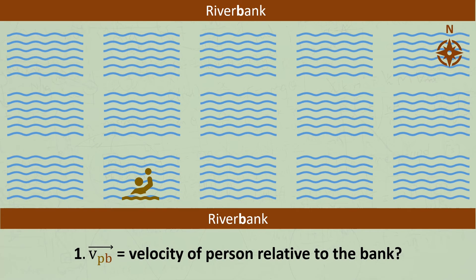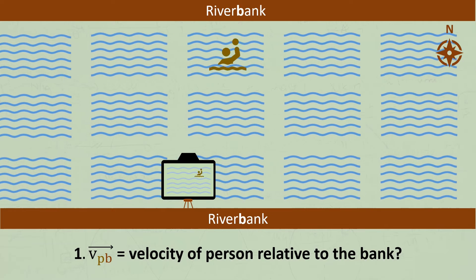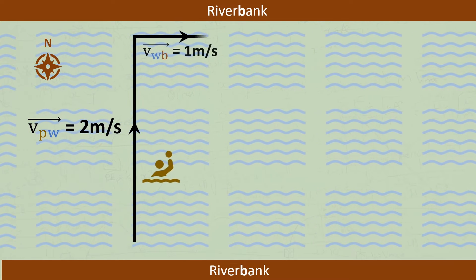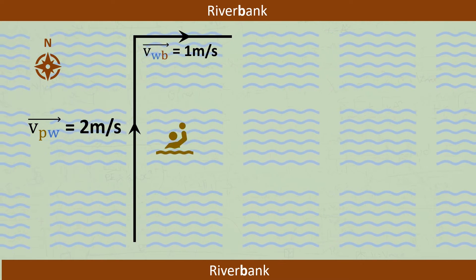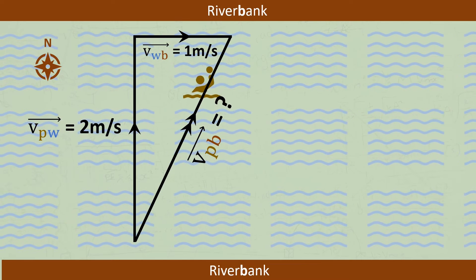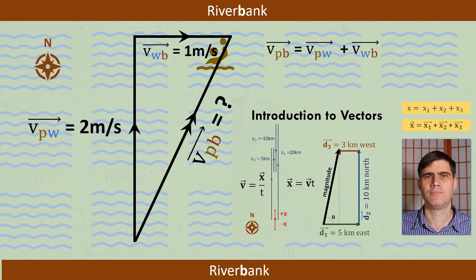The first question asks for the velocity of the person relative to the bank. So let's place our imaginary camera on the river bank and think about what it would record. Most students quite easily add these two vectors to get the velocity of the person relative to the bank. If you're not sure how or why I'm adding these vectors like this, or why I'm using two arrows on the resultant or what that means, I suggest watching my previous video on vectors.